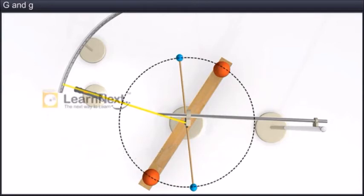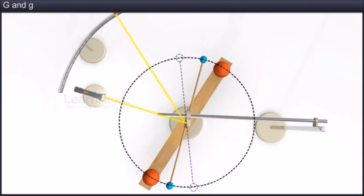The gravitational force of attraction between the smaller and the bigger spheres causes the smaller ones to move towards the larger ones. Hence, they move along the arc of a circle with a radius equal to half the length of the rod.